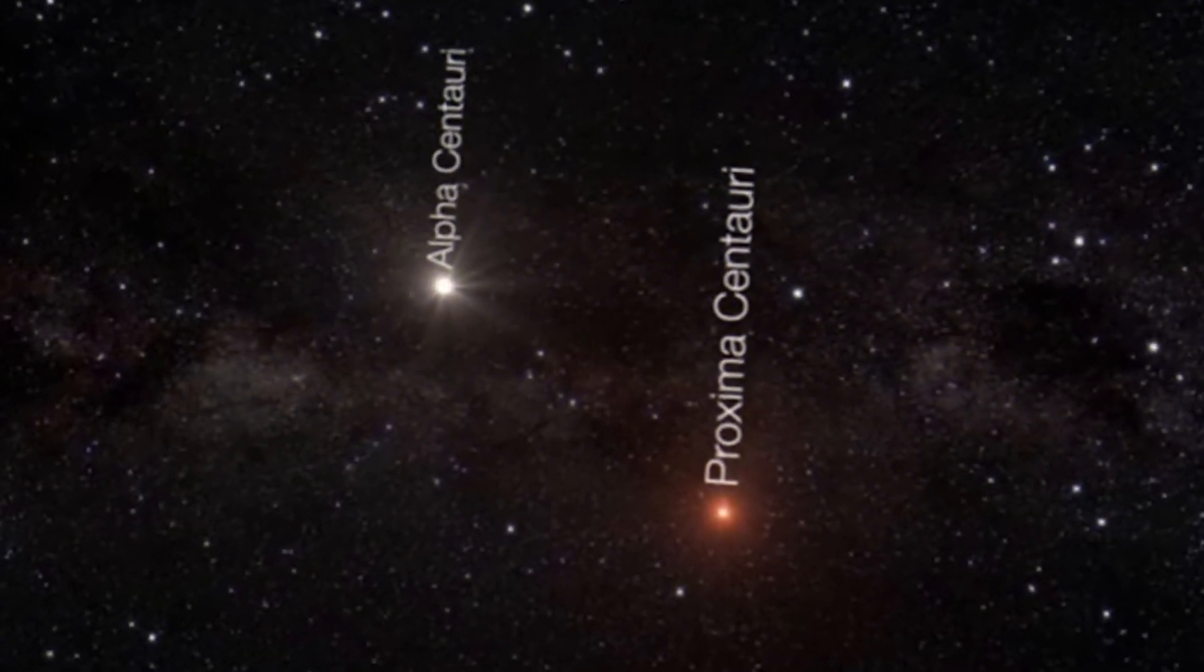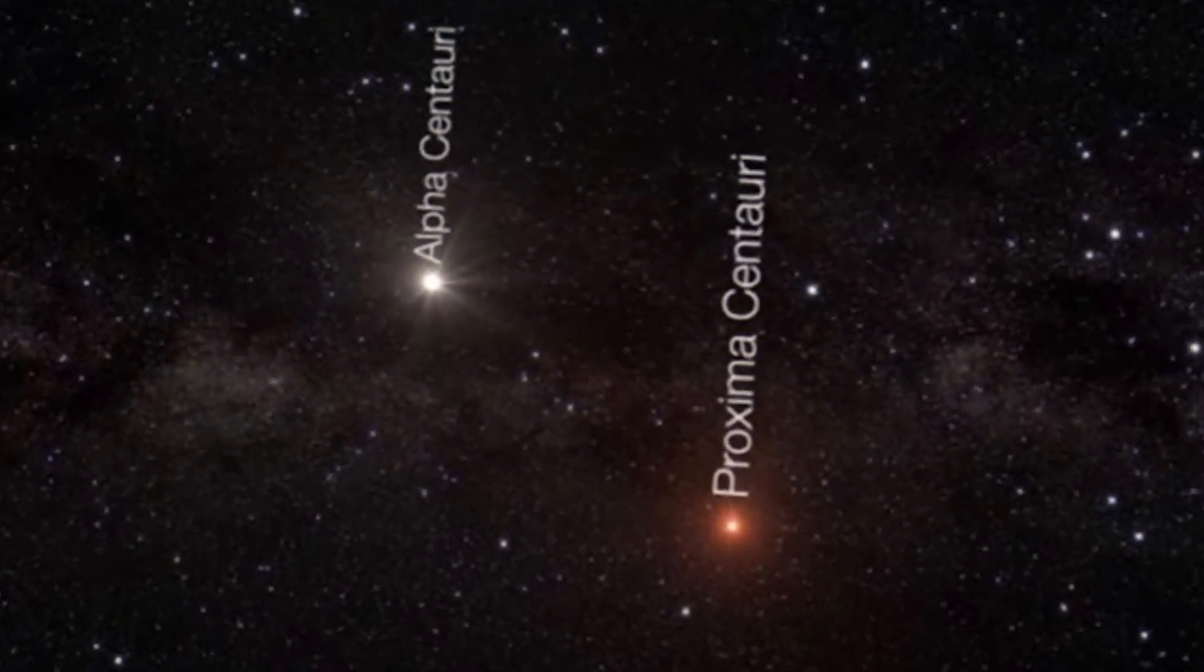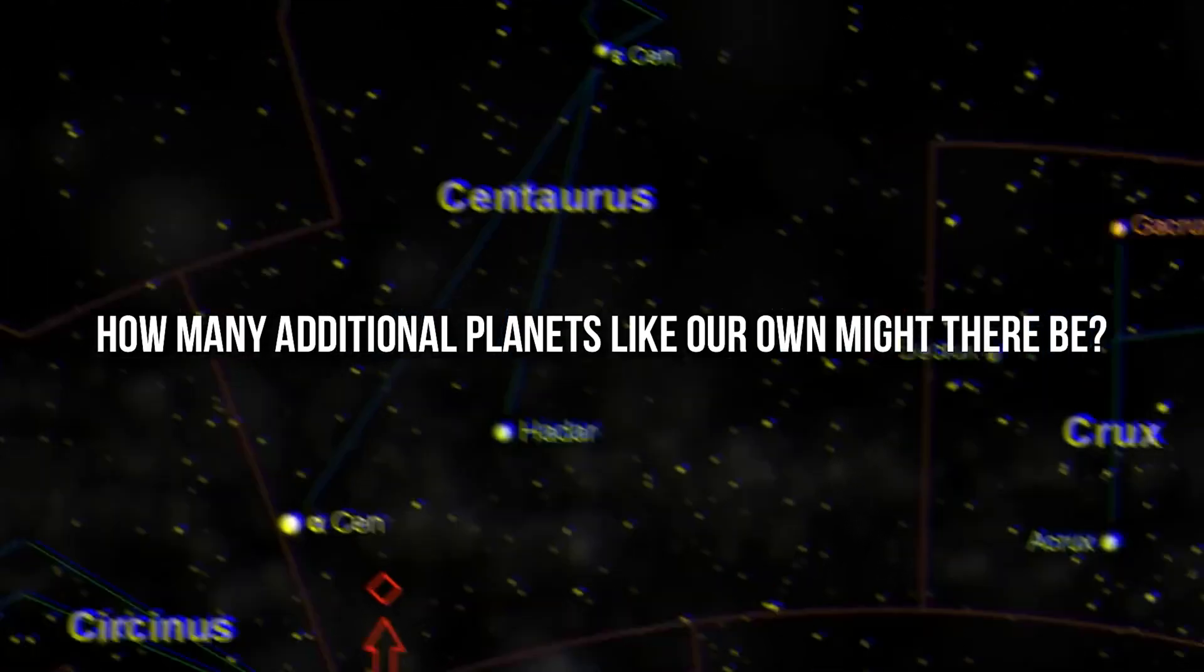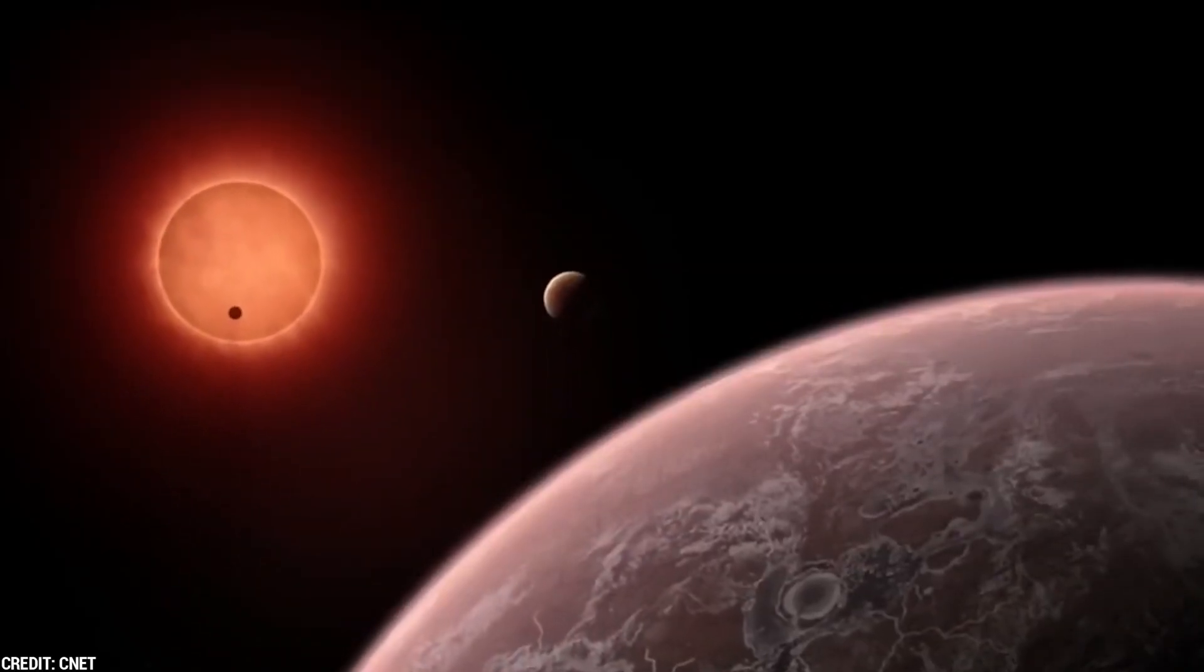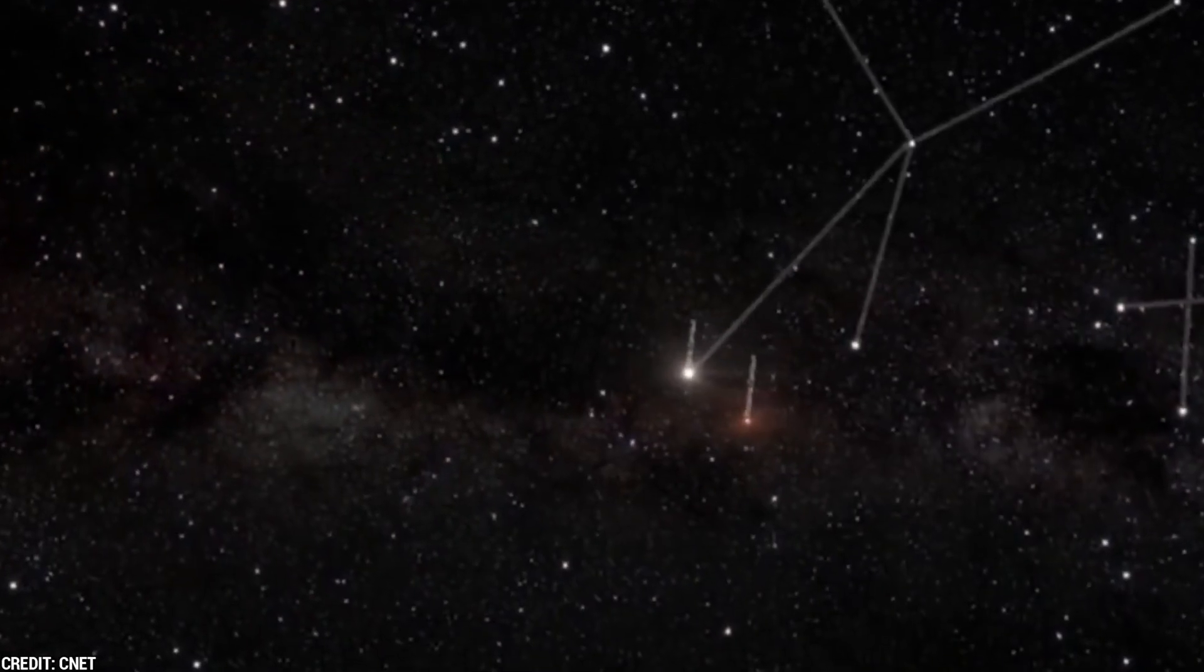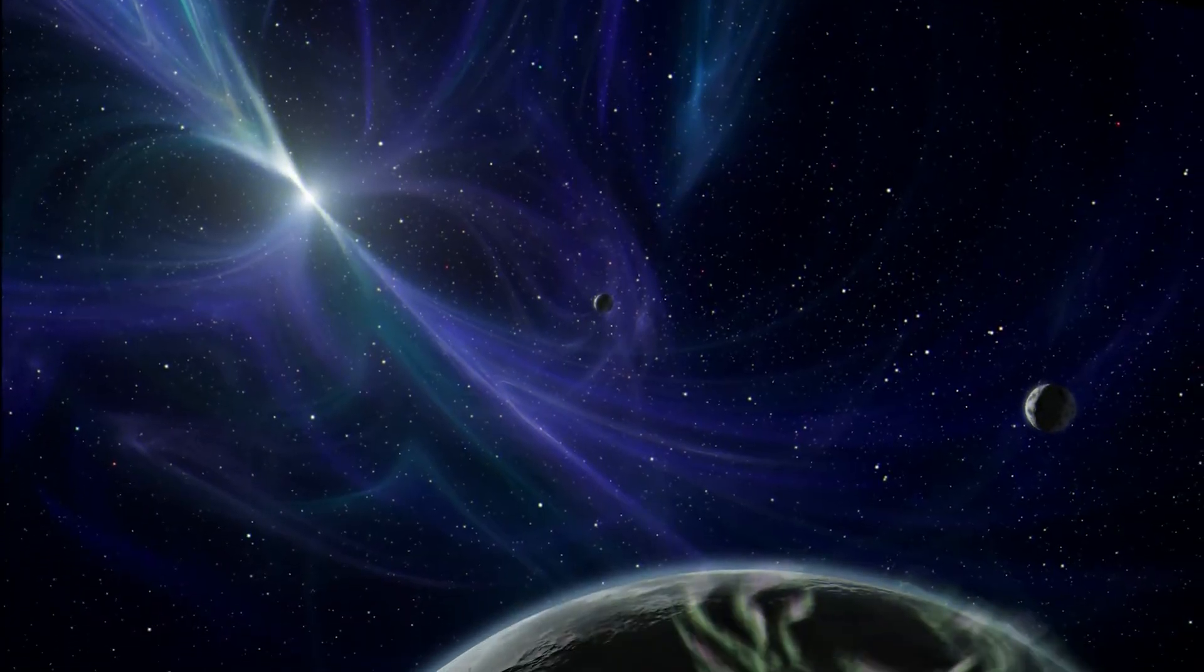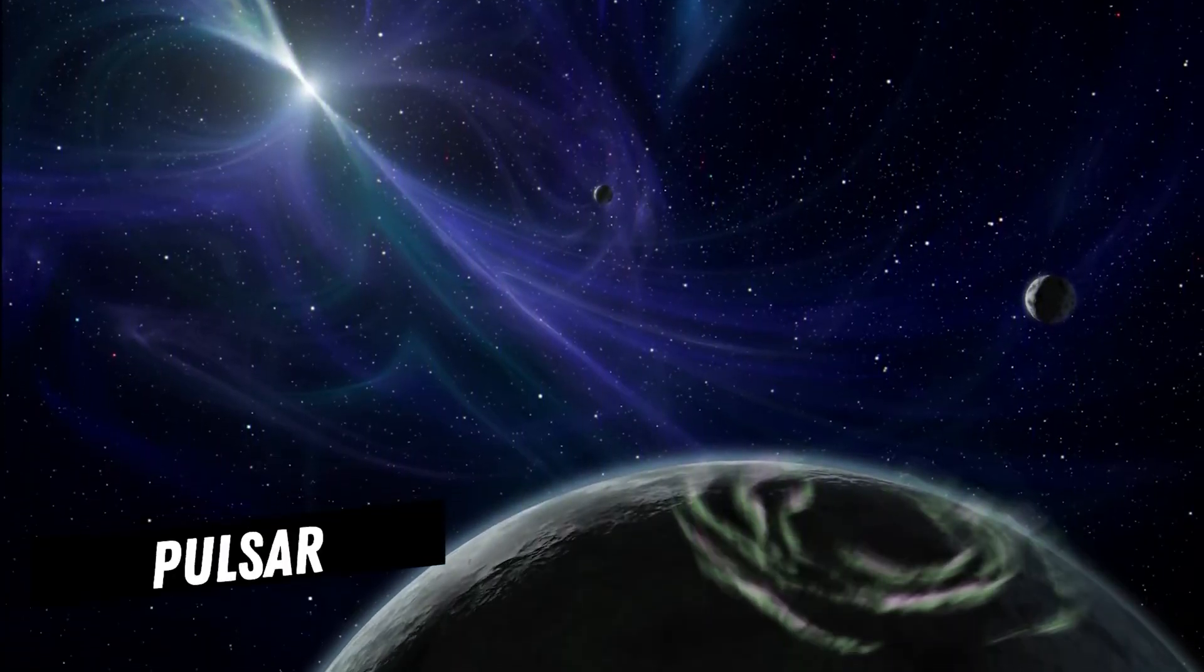Imagine the possibilities. After arriving at Proxima Centauri, mankind would have an entire star system to explore. How many additional planets like our own might there be? Exoplanets are planets outside our solar system, and thousands have already been discovered. In 1992, scientists made the first official findings of planets circling a particular class of neutron star called a pulsar. Three years later, the first planet revolving around a star similar to the Sun was found. Since then, numerous additional planets have been discovered, including several Earth-sized worlds within the habitable zones of their stars.